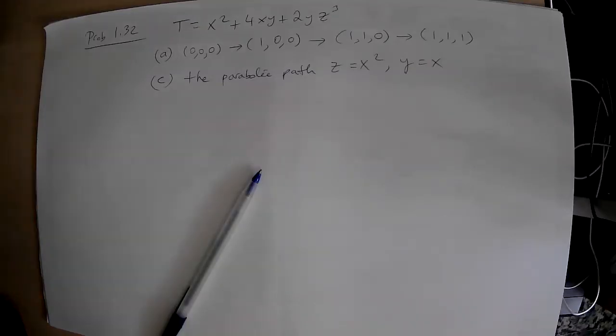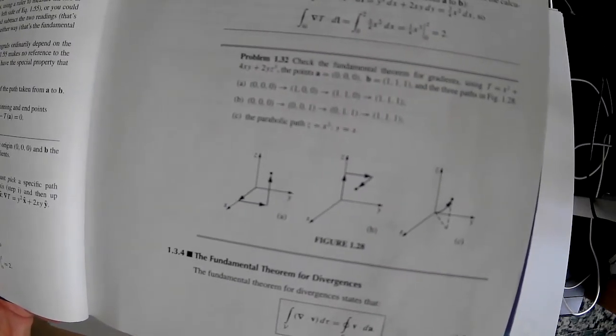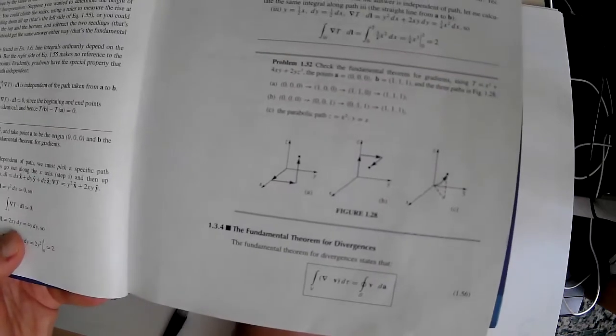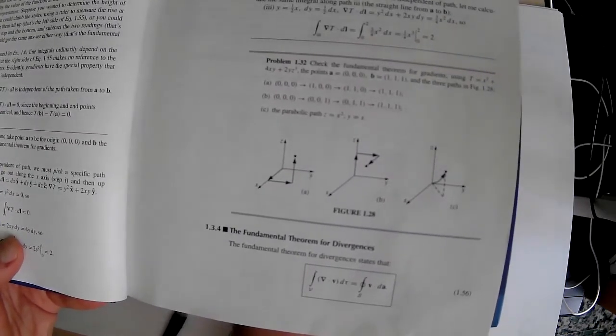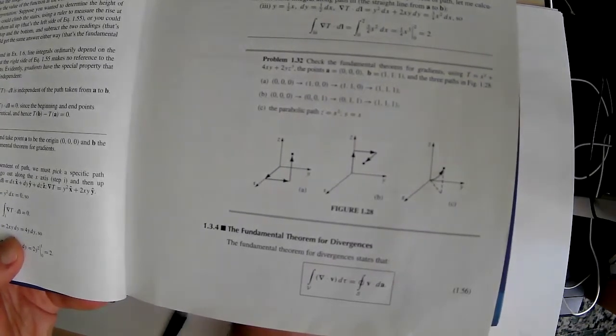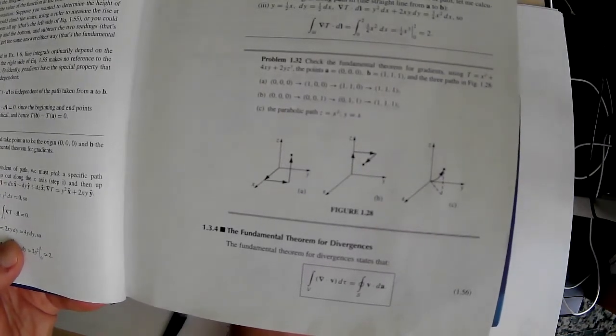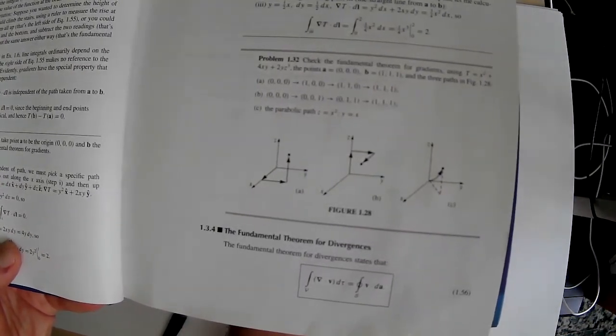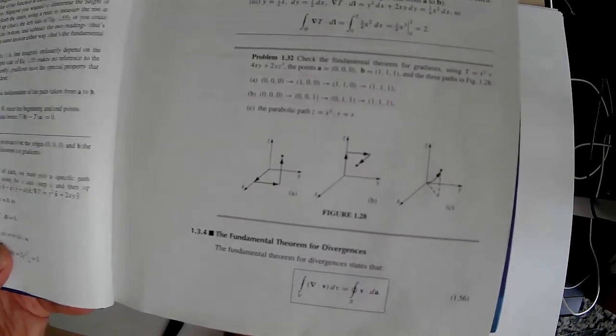Alright, we're solving problem 1.32. Check the fundamental theorem for gradients. The function is given, and it's from the origin to point (1,1,1), but there are different ways we can get there. I'm going to do part A, part B is pretty similar, and part C is interesting because it gives us a parabolic path. Alright, I'll do part A and part C.